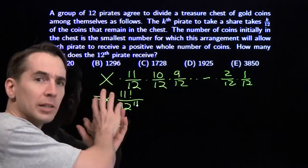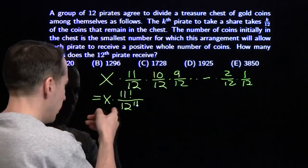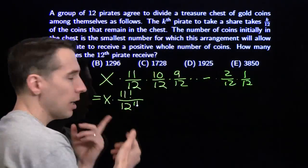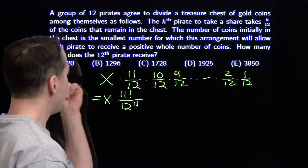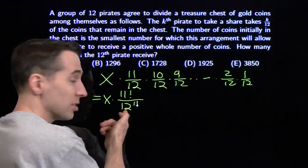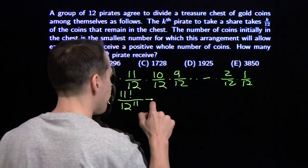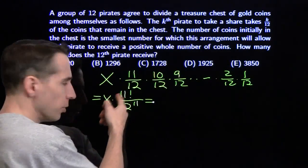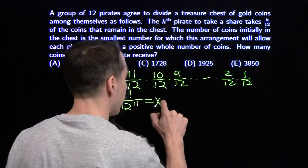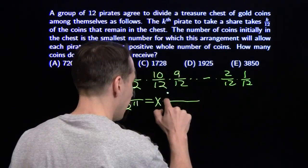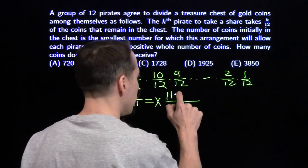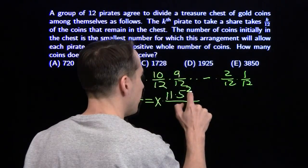For now, let's focus on what the last pirate gets. If we just choose x equal to 12 to the 11th, this comes out to an integer, but 11 factorial is not among the answer choices. So we simplify the fraction by taking out all the factors of 2 and 3 from 11 factorial. What's left is a factor of 11, two fives from the 5 and the 10, and a 7.